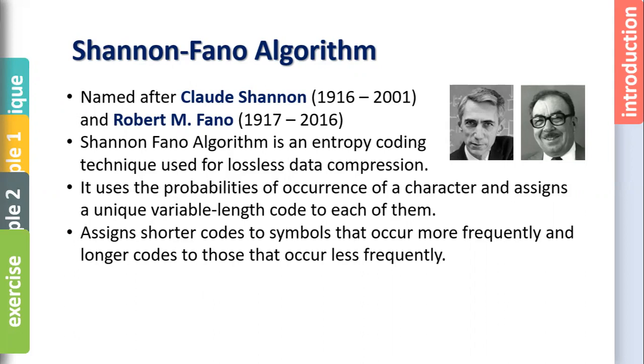So basically this algorithm assigns shorter codes. The codes here are binary numbers to symbols or characters in this example that occur more frequently like character A, U, and longer codes to those that occur less frequently like X, Q.